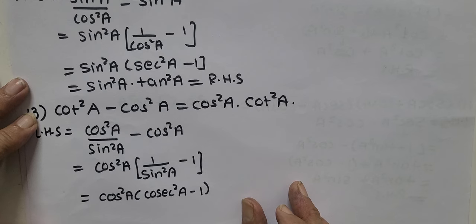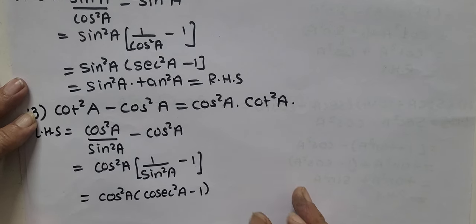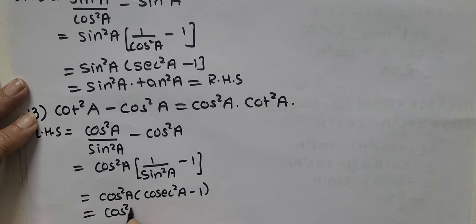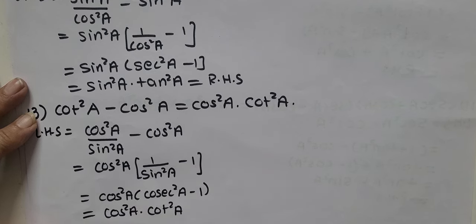Cosec square A minus 1 is cot square A. So cos square A into cot square A. That gives us RHS.